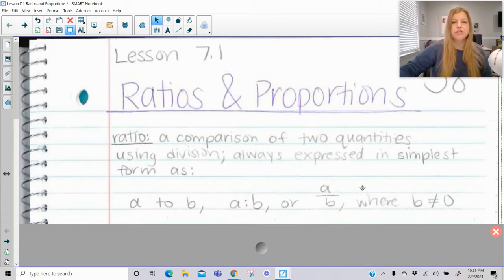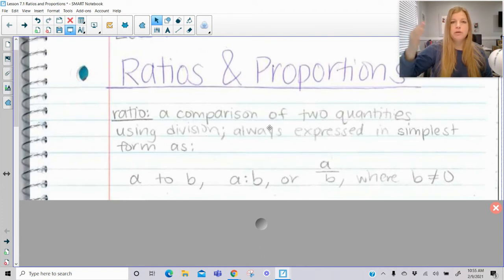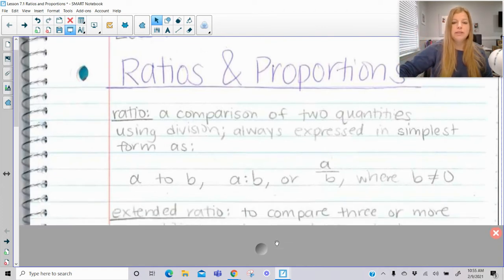So I could have a ratio that says 3 to 4, 5 to 8. I wouldn't want to write a ratio as 10 to 15 because that's not in simplest form. Instead of writing 10 to 15, you would write it as 2 to 3. It's a comparison of two quantities using division, always in simplest form.